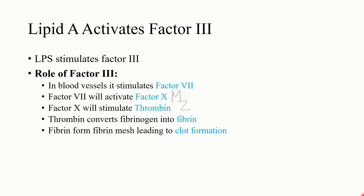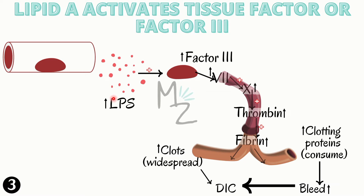The third function of lipid A is that it activates factor 3. Lipopolysaccharide stimulates factor 3 via its lipid A component. Factor 3 then stimulates factor 7 in the blood vessel, factor 7 activates factor 10, factor 10 stimulates thrombin, and thrombin converts fibrinogen into fibrin. Fibrin forms a fibrin mesh, leading to clot formation.